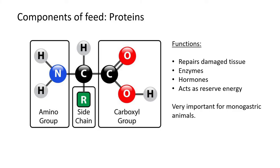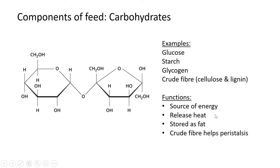Protein is especially important for monogastric animals because they need to ingest proteins to actually build proteins. Ruminants like cows, on the other hand, only eat grass and fibrous feed — they don't eat protein directly. The bacteria in the rumen create non-protein nitrogen (NPN) compounds, using other nitrogen elements from foodstuffs to make protein for the ruminant. So ruminants don't need to eat protein, but monogastric animals do.